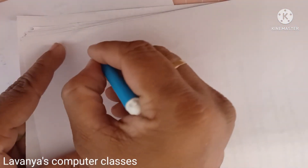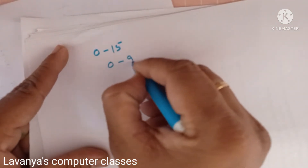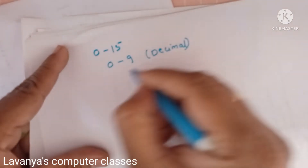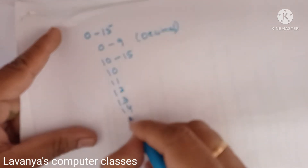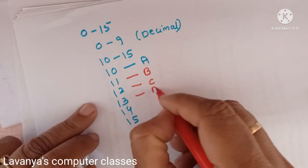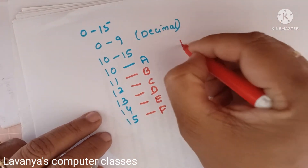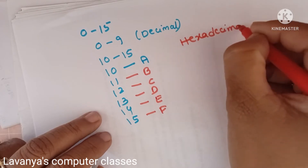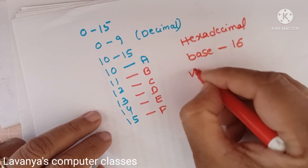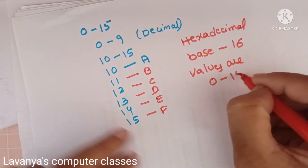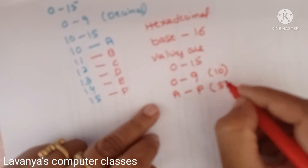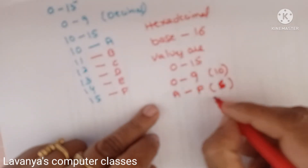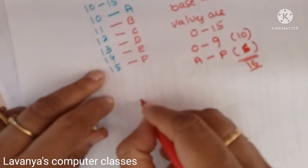These are the four different types of number systems. In hexadecimal, total values are 0 to 15. In our real life, we use only decimal values 0 to 9, but in hexadecimal, 10 onwards is represented with alphabets: 10 is represented as A, 11 as B, 12 as C, 13 as D, 14 as E, and 15 as F. So 0 to 9 are 10 numerical values, and A to F are 6 alphabetic values, totalling 16 values with range 0 to 15.